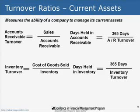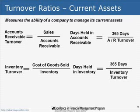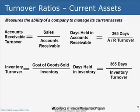The third type are turnover ratios, which measure how well a company manages its assets — particularly accounts receivable and inventory. You want to turn those assets over quickly and not hold them for very long. The key ratios are accounts receivable turnover, inventory turnover, and the corresponding number of days each is held.